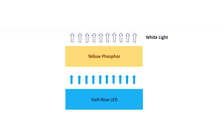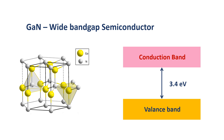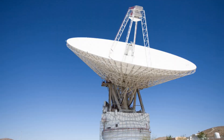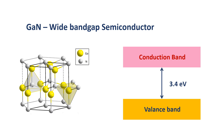Today, because of gallium nitride blue LEDs, it is also possible to generate white LEDs, which are commercially available. But because of its other useful properties, gallium nitride is also used in power electronics as well as at microwave frequencies.